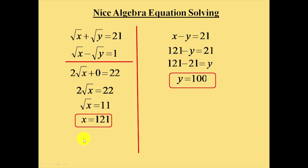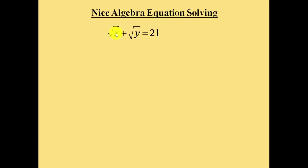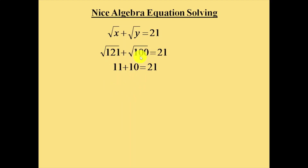Now let us verify these values. We will substitute into the first equation: square root of x plus square root of y equals 21. The value of x is 121 and y is 100. So square root of 121 plus square root of 100 should equal 21. Square root of 121 is 11, square root of 100 is 10, and 11 plus 10 equals 21.